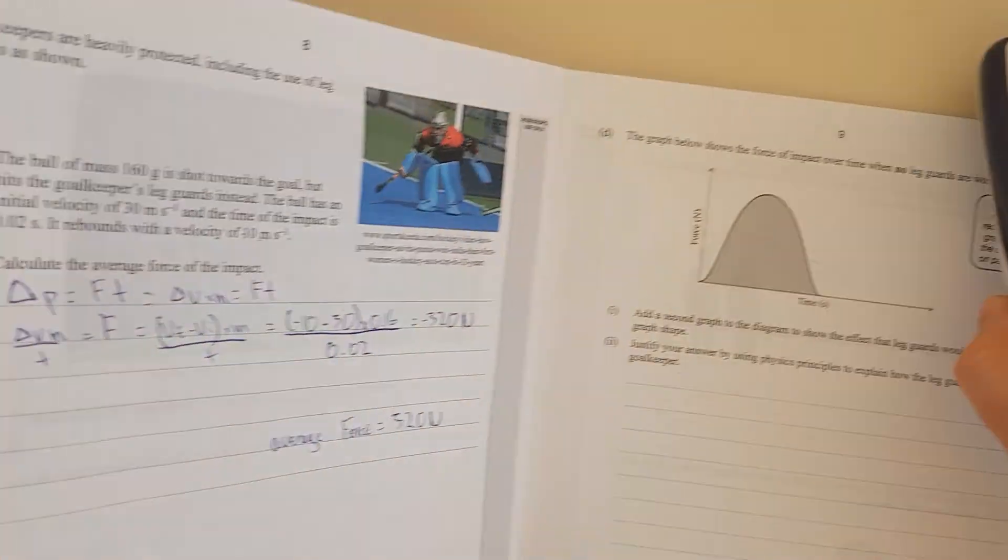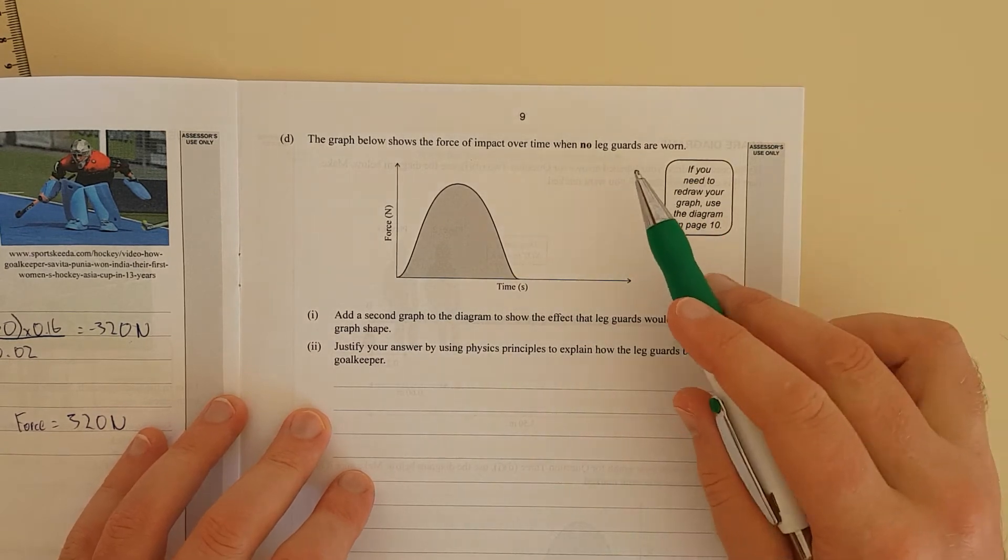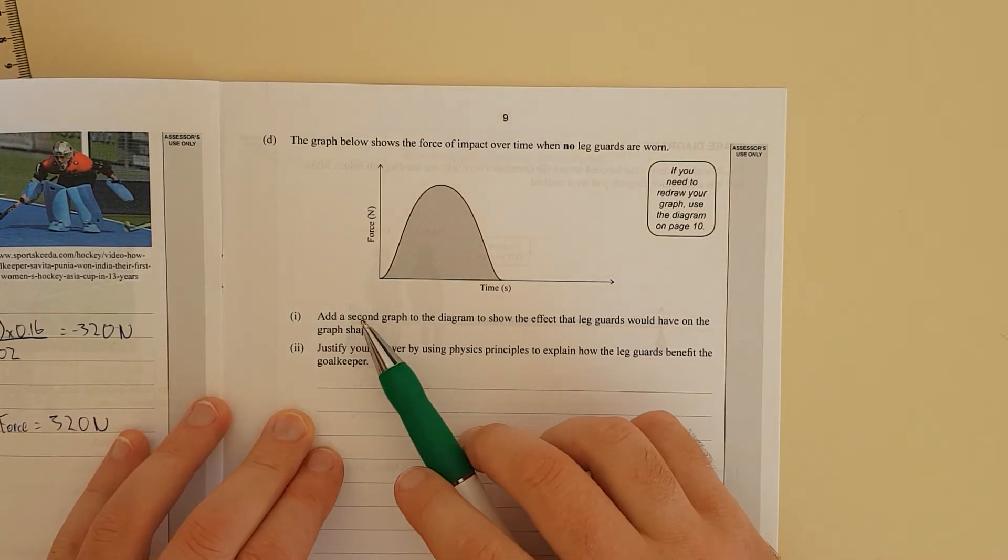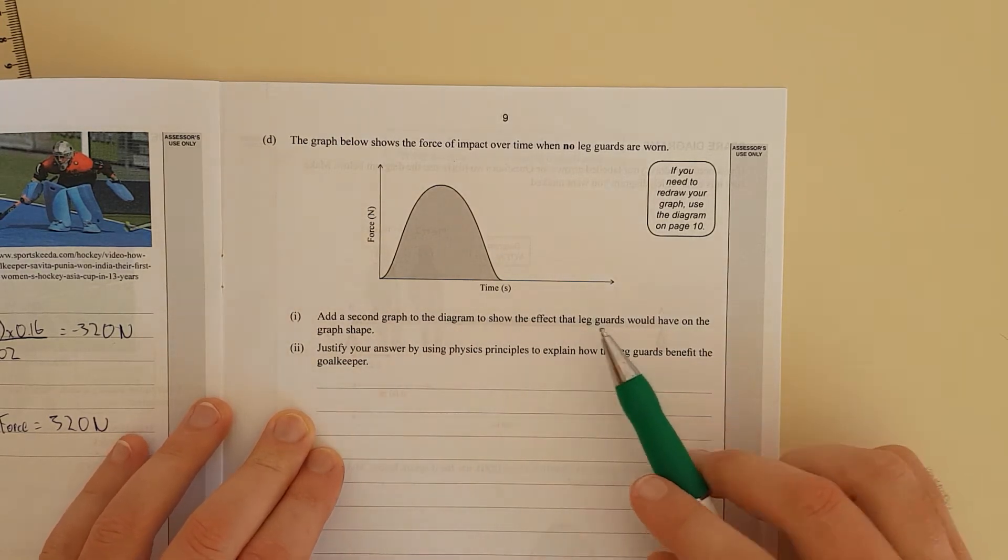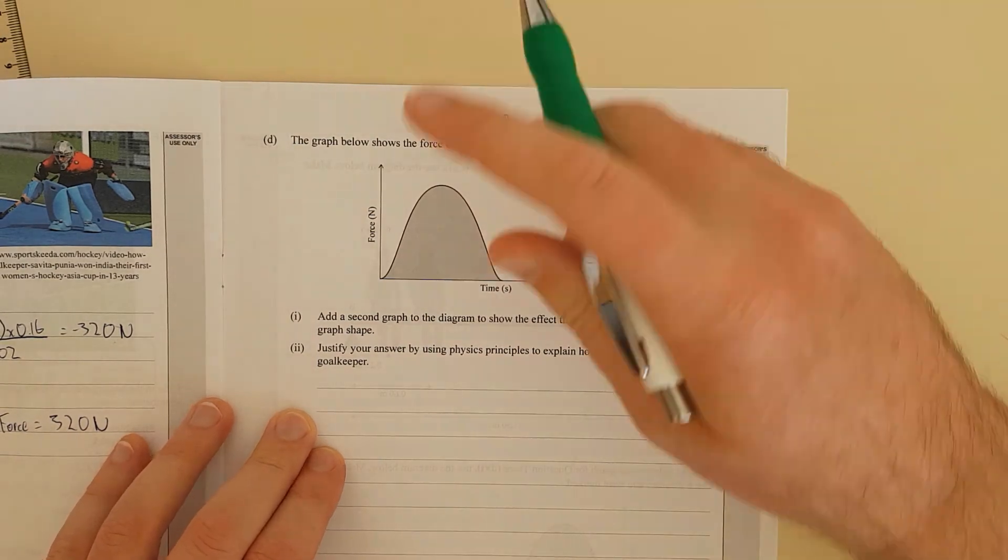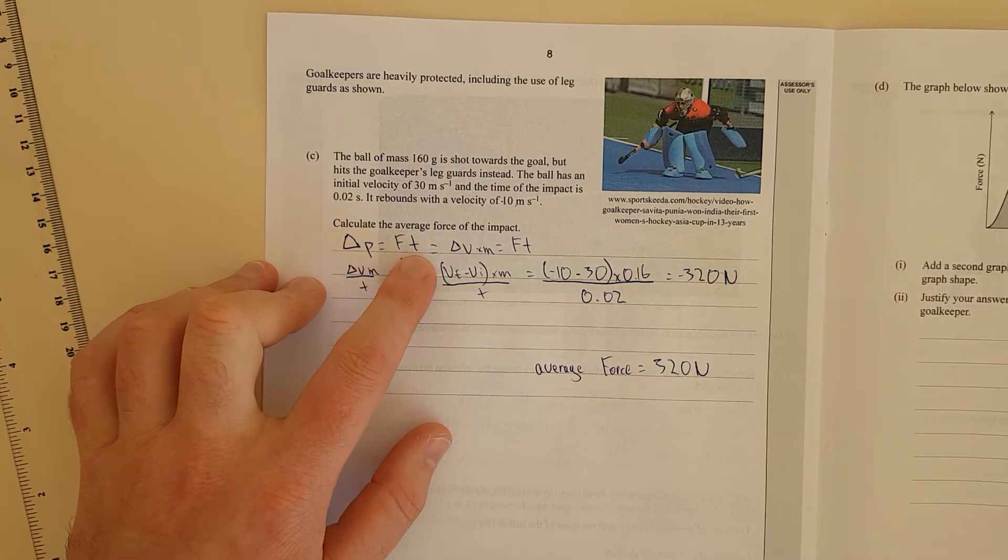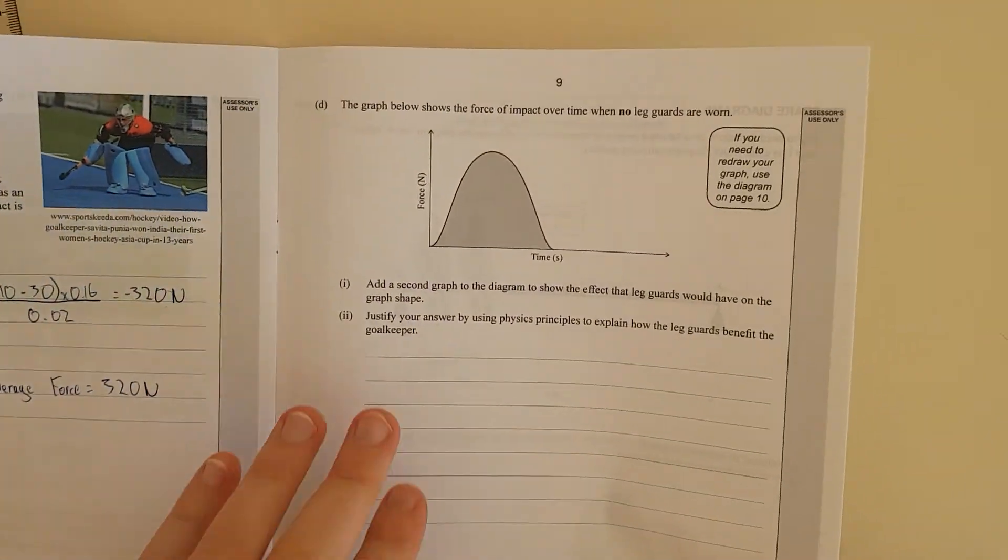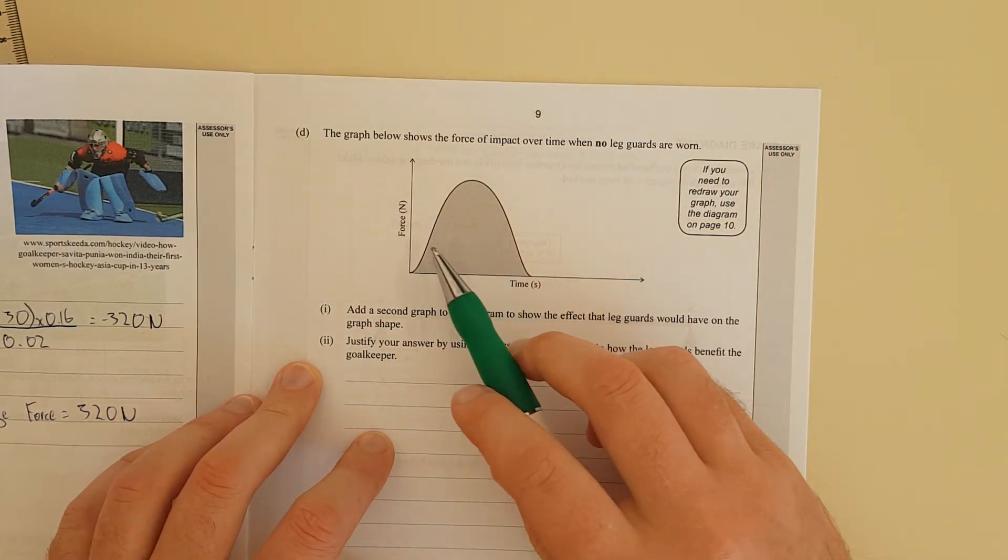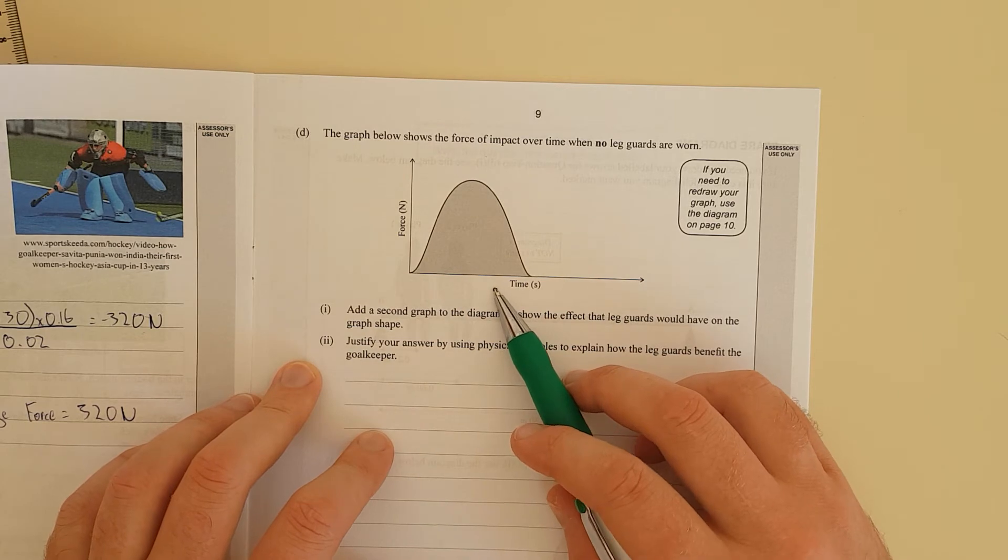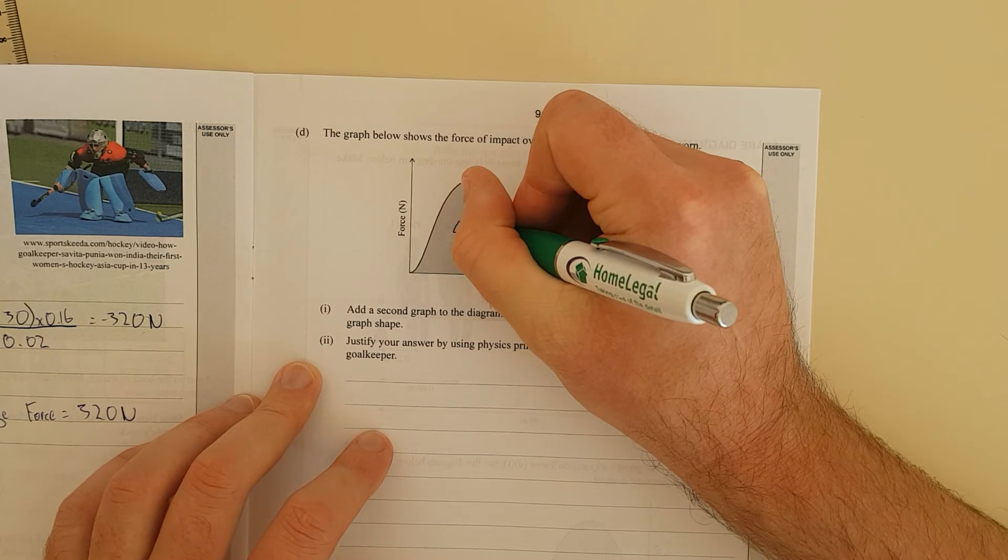Right. Last question. The graph below shows the force of impact over time when no leg guards are worn. Ouch. Add a second graph to show the effect that the leg guards would have on the graph shape. So, in our formula, on this page here, we have change in momentum equals force times time. If you know anything a little bit about shapes, if this was a square, the area of that square would just be force, base times height. Base times height, force times time. So, that area inside here, this, technically speaking, is a change in momentum.